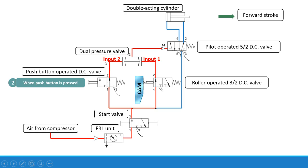Now there is input 1 and input 2 — two inputs are provided — and therefore the output will be obtained from the dual pressure valve. Both input 1 and input 2 are necessary to produce output 2, and therefore it is known as the AND logic function. From output 2 the air goes and operates the left envelope mode of the 5x2 valve via the pilot line, giving us the left envelope mode.